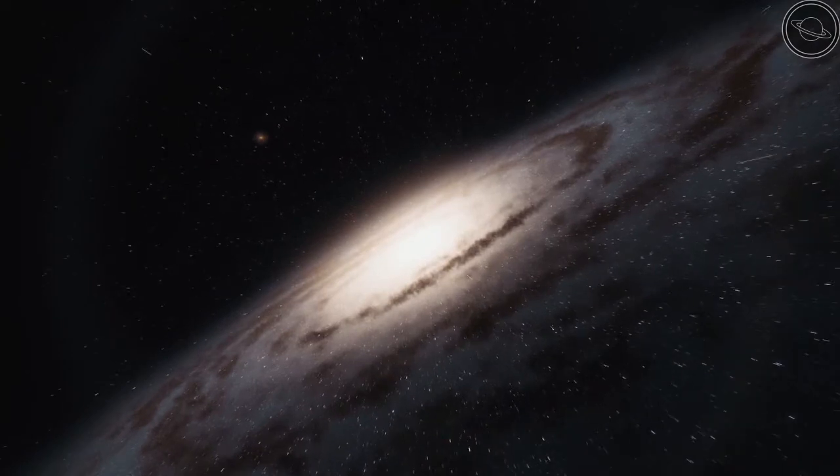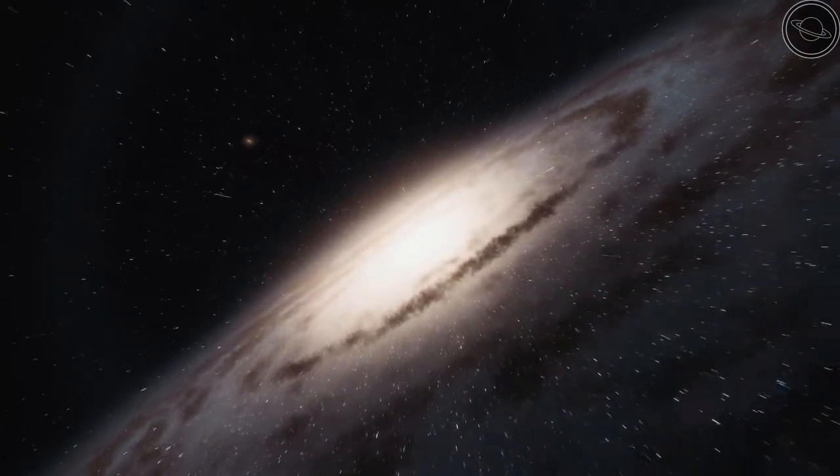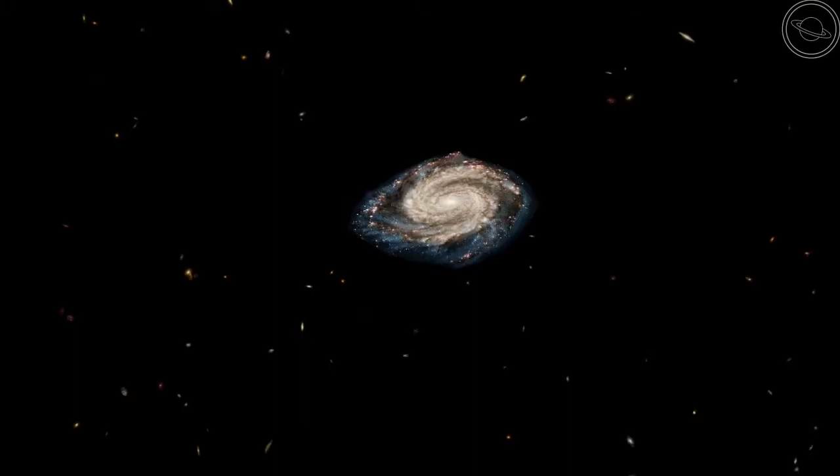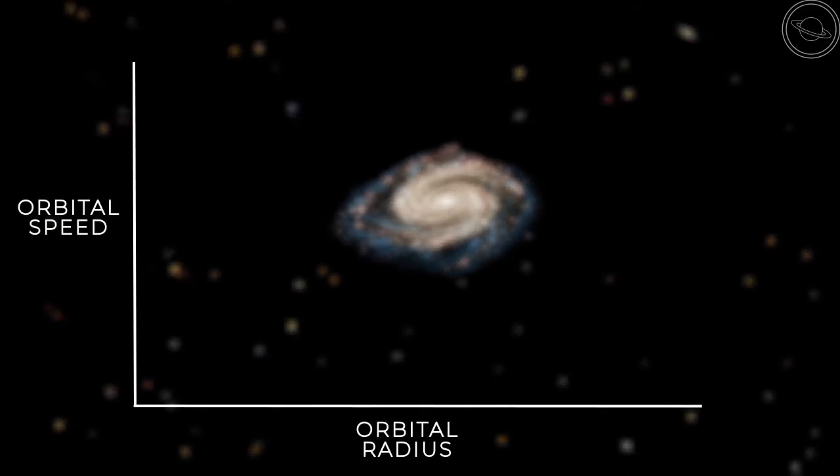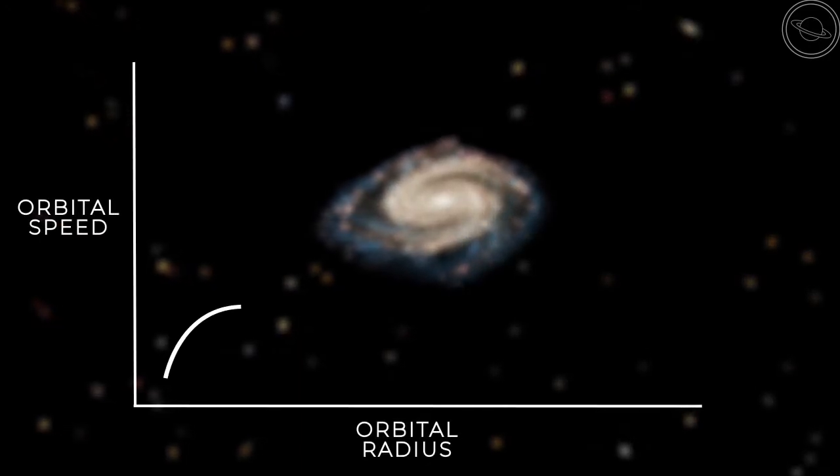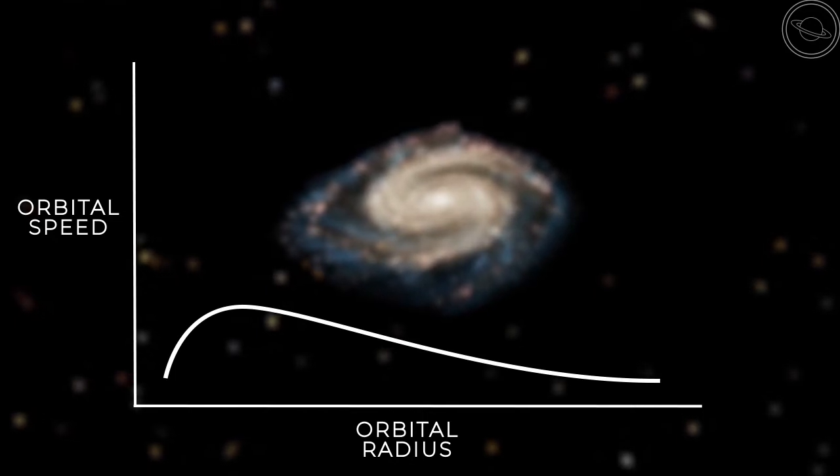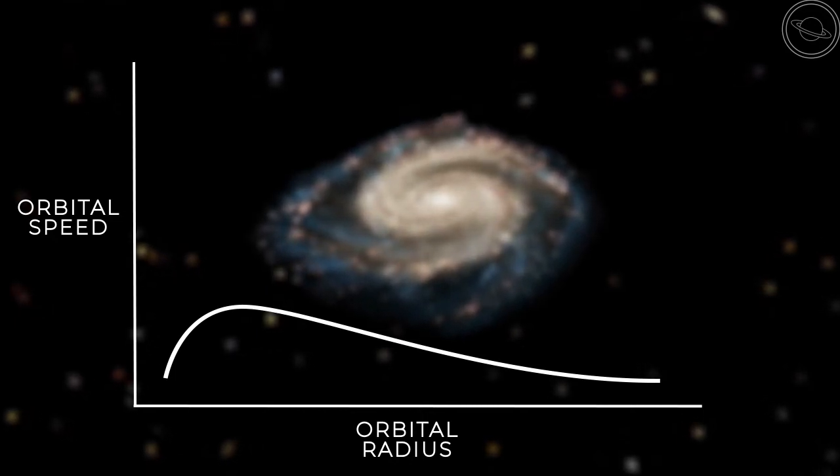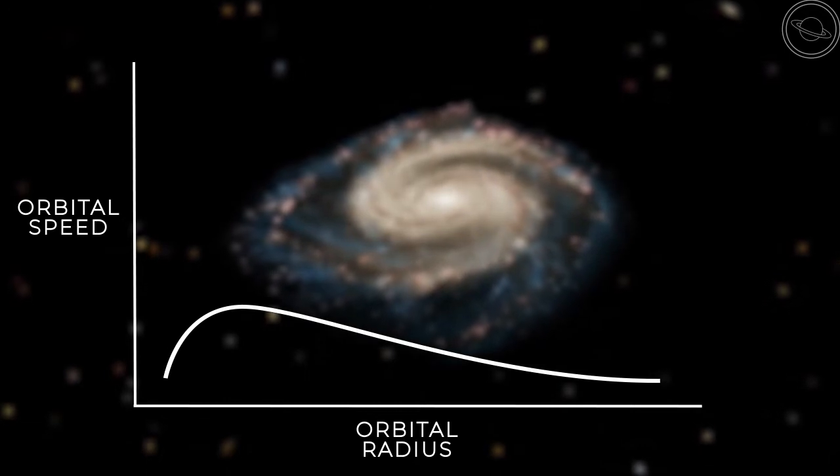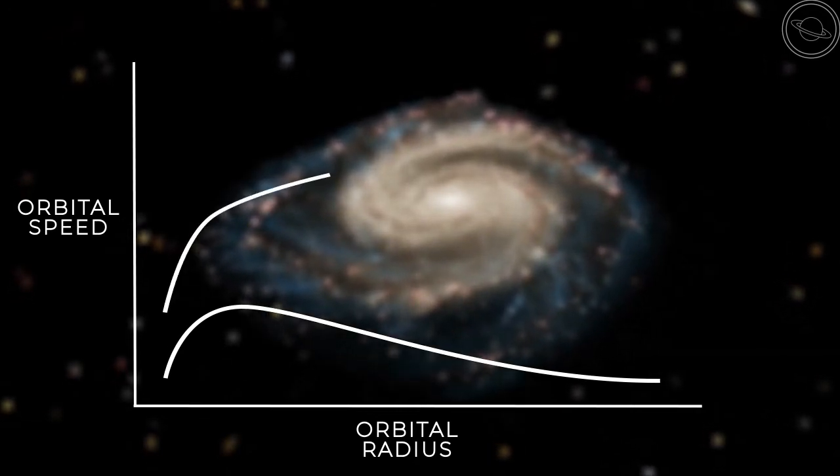Rubin noticed that the orbital speed of stars at the edge of Andromeda was higher than the stars towards the center. When plotting the orbital radius against the orbital speed, you would expect a downwards curve as the speed decreases for more distant objects. But for the Andromeda galaxy, this was the exact opposite. The graph she plotted over many years of collected data was constantly increasing.